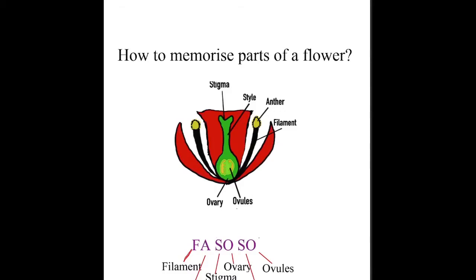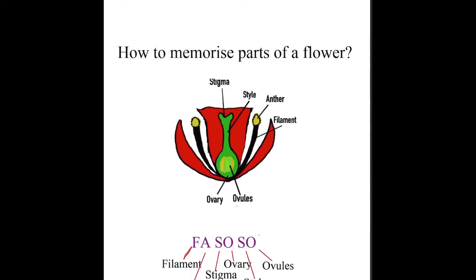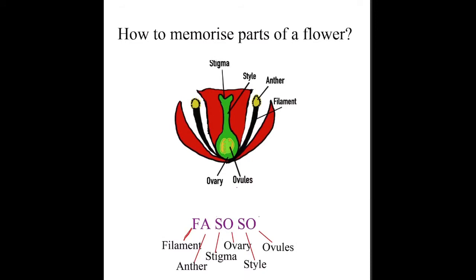How to Memorize Parts of a Flower? The strategy will be to use the acronym FASSO. Each letter in the acronym represents a part of the flower.